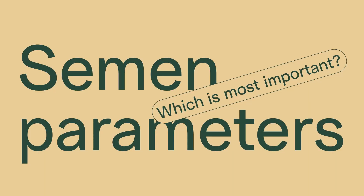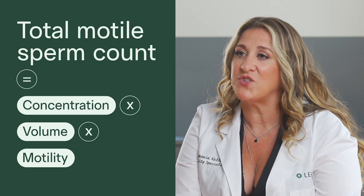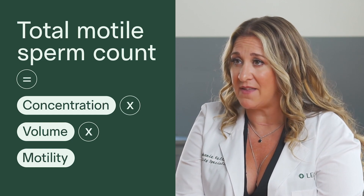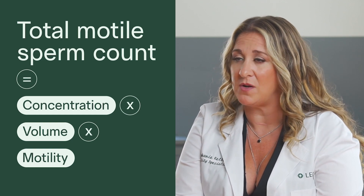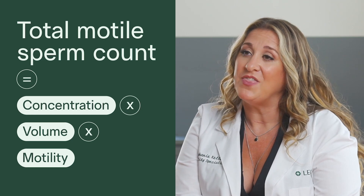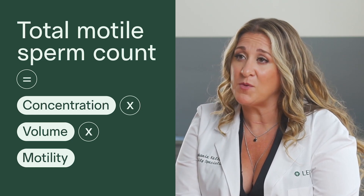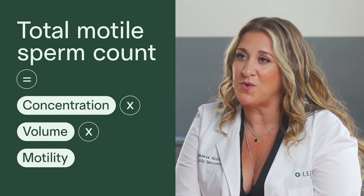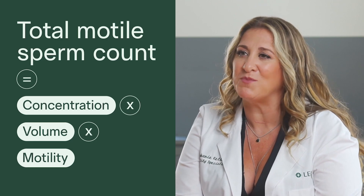For the purposes of natural conception, usually we would refer to the total motile count as the most important number on this report as far as your likelihood or probability of being able to conceive via traditional methods. The total motile count is factoring in the three most important pieces: your concentration or count of how many sperm we see in your sample, the volume of the sample being analyzed, and the motility, which shows us how the sperm themselves are swimming and moving.